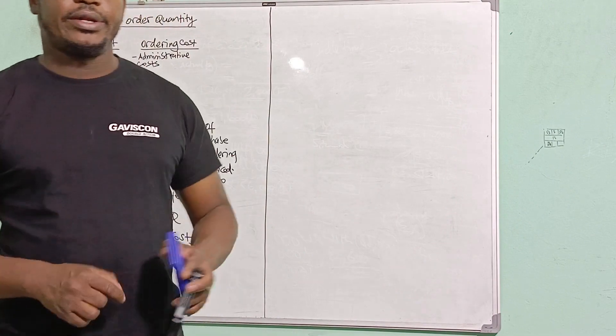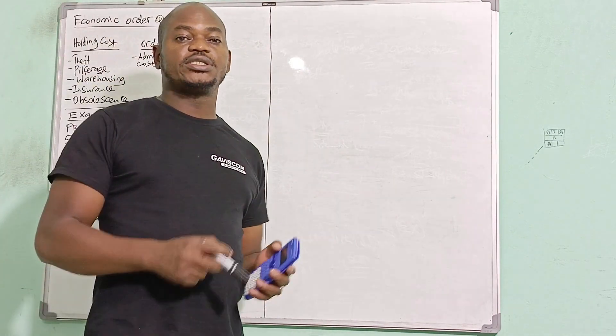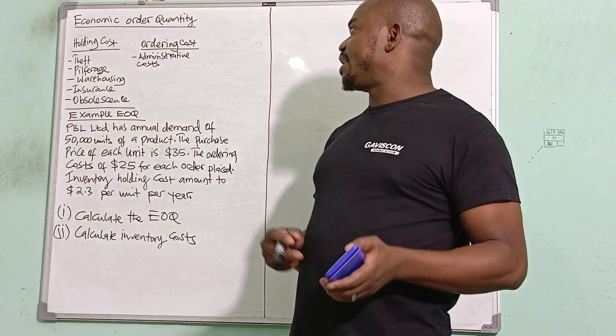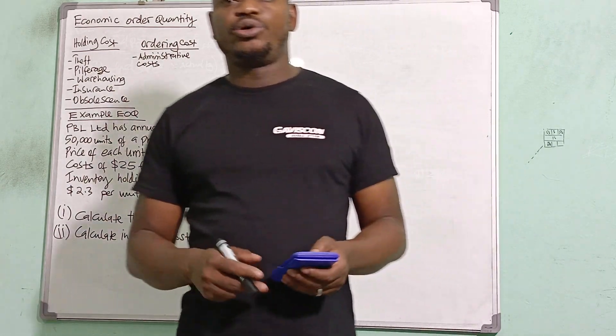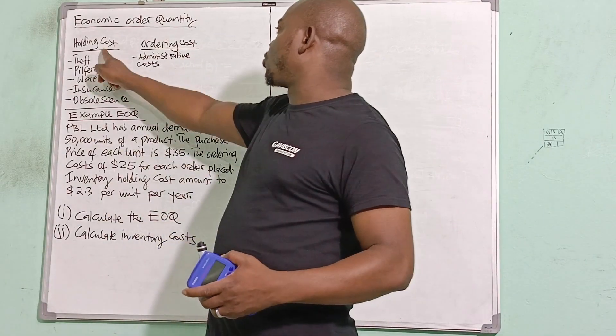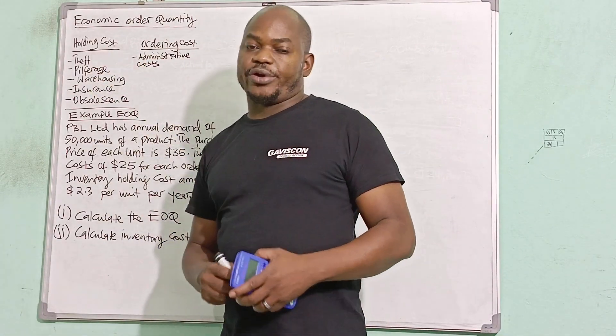So I'll explain what economic order quantity is. Economic order quantity is basically an ideal inventory order size that seeks to minimize the holding cost and ordering cost.